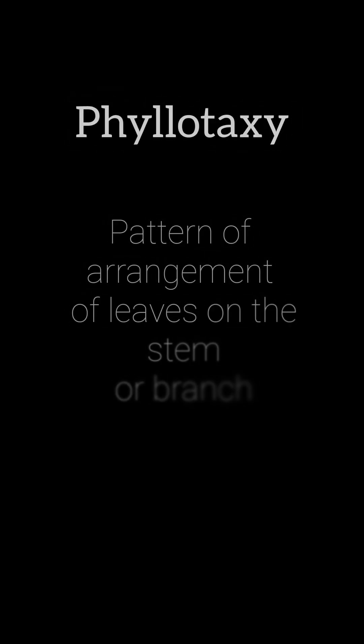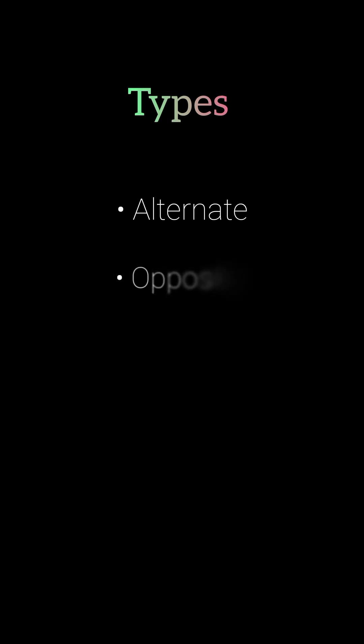Phyllotaxy is basically a pattern of arrangement of leaves on the stem or branch. It is usually of three types: Alternate, Opposite, and Whorled.